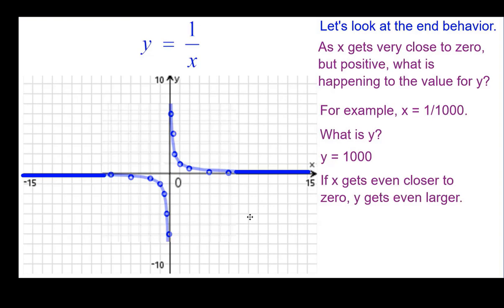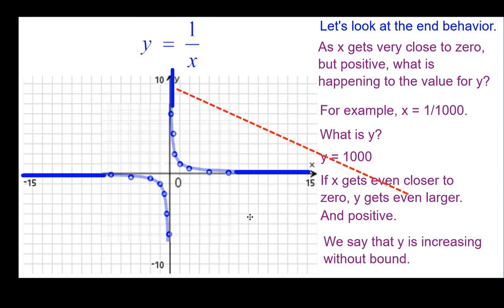So as x gets even closer to zero, y gets even larger. And so how we show that on the graph is we have this line getting really close to the y-axis on the positive side. And we say that the curve is increasing without bound or the y-value is increasing without bound.